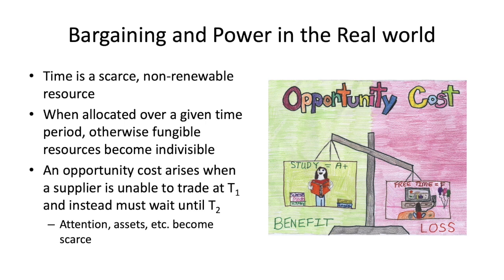In general terms, an asset becomes scarce over time. For example, thinking about Airbnb: I can rent my house today for someone to spend the night and feed them breakfast, and they'll pay me for it. If I don't rent my house today, I've lost that opportunity.